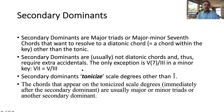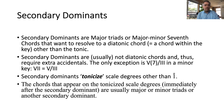Secondary dominants tonicize scale degrees other than I. We call this tonicization — the process of resolving to a certain scale degree. The chords that appear on the tonicized scale degrees immediately after the secondary dominant are usually major or minor triads or another secondary dominant. They are not diminished triads or augmented triads, because those would be unstable chords.